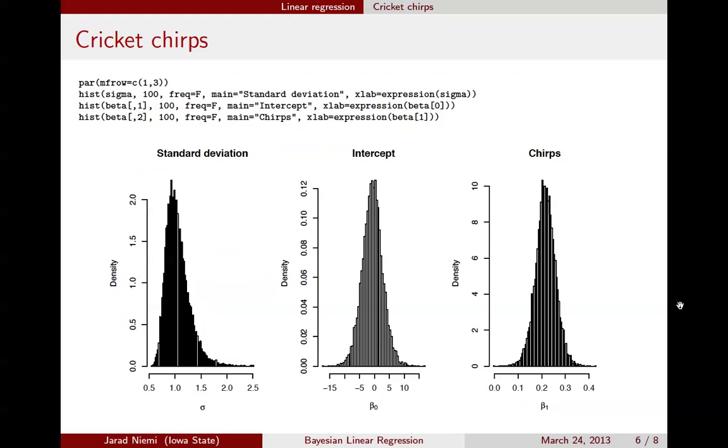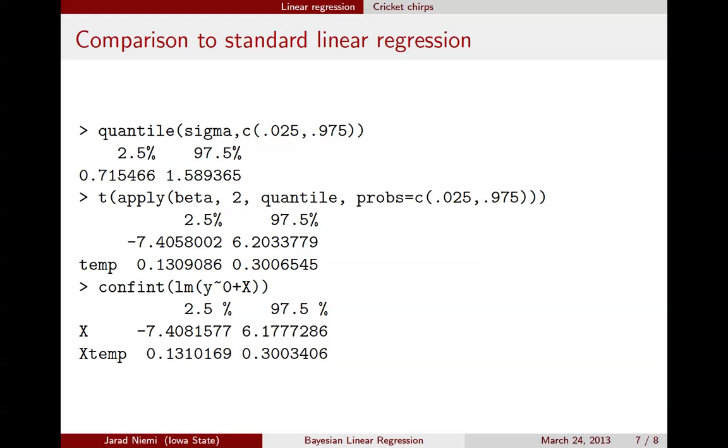So we can look at posterior distributions here, or equivalently, we could look at quantiles. Here's the quantile for the variance, now for the standard deviation, sigma.